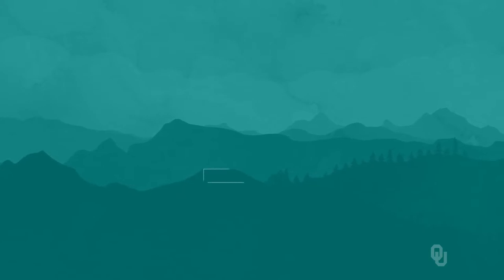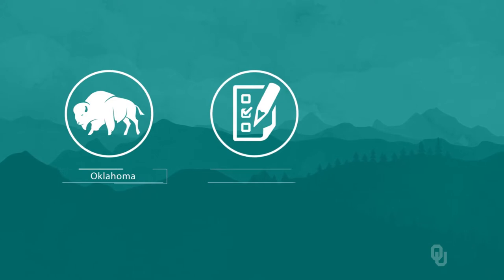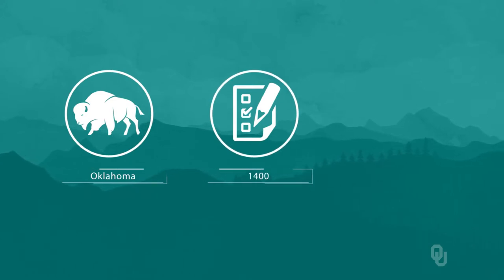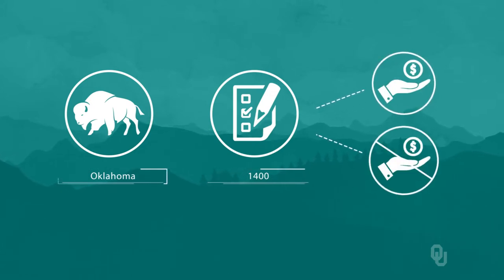Regression discontinuity gives us an unbiased estimate of the treatment effect by comparing outcomes of students who just barely qualified for the scholarship with outcomes of students who just barely missed qualifying for the award. Suppose that in Oklahoma, the cutoff PSAT score for winning the national merit is 1400. Students scoring 1400 or above get a national merit scholarship, while those below do not.